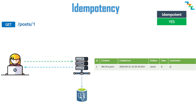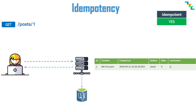First, we will see about the GET endpoint, which is used to retrieve data. Calling the GET method multiple times won't change the state of the server, since this is just a read-only operation used to retrieve data from the server.